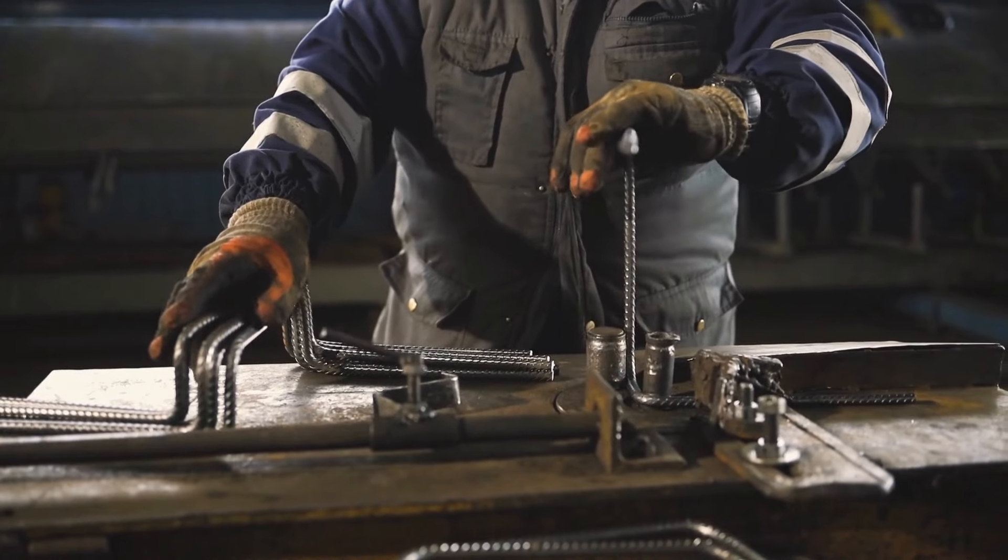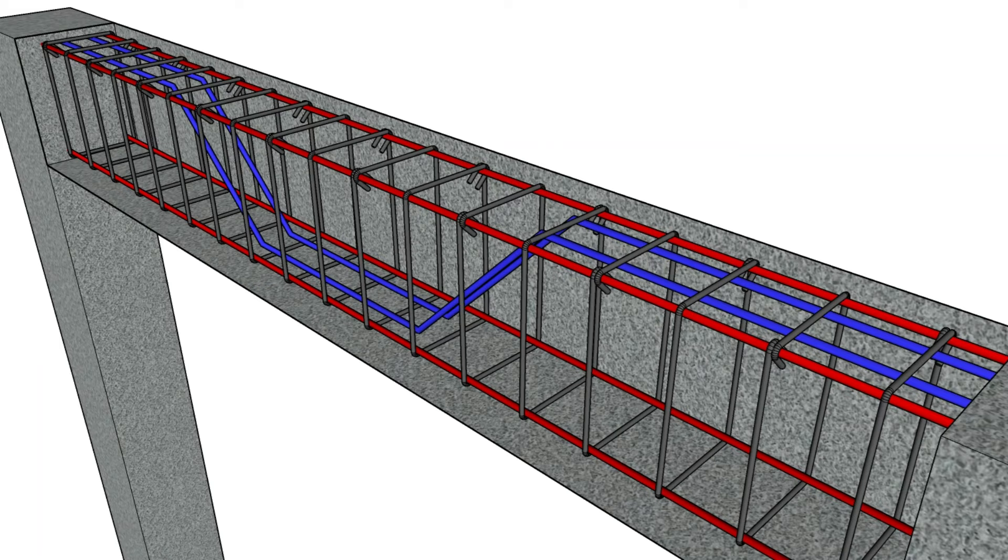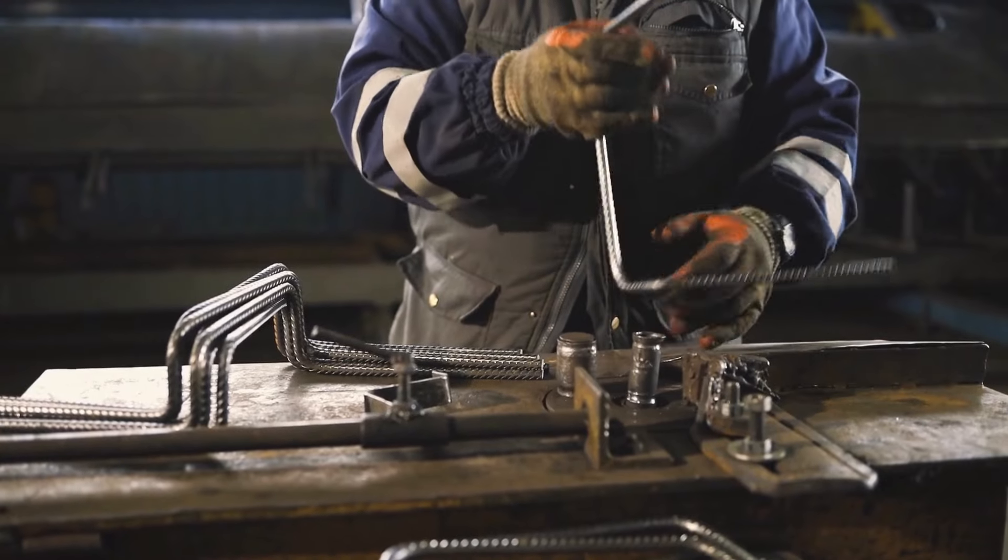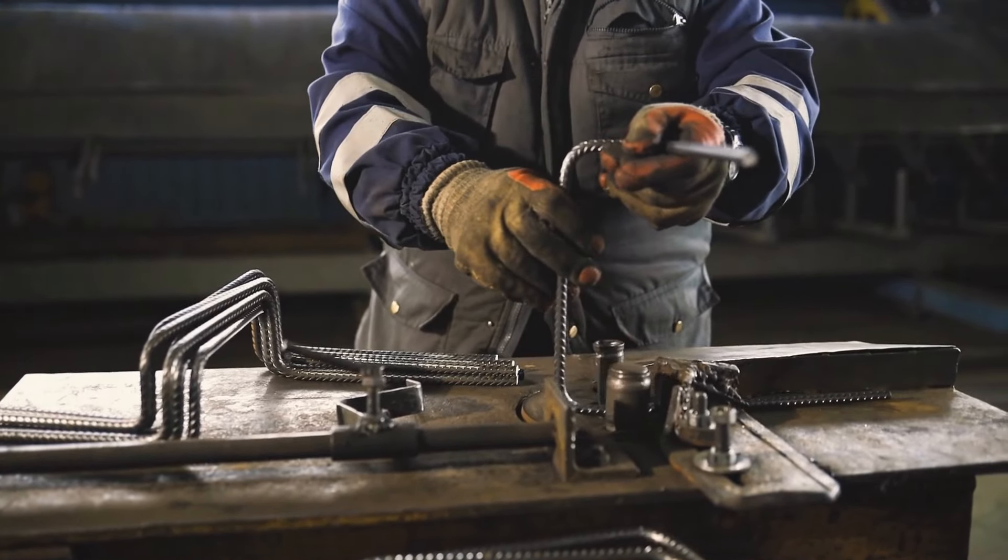This deduction is made to calculate the actual length of the rebar required for a specific bent shape accurately. When bending a rebar, especially for structural members like beams, columns, footings, the process involves bending the rebar at specific angles and dimensions as per the design.